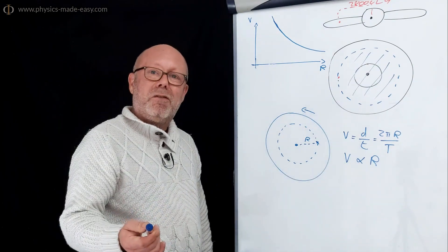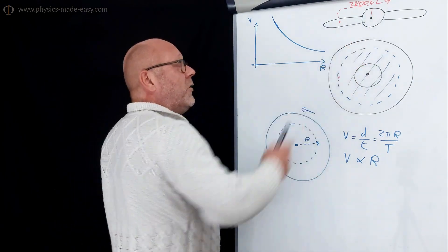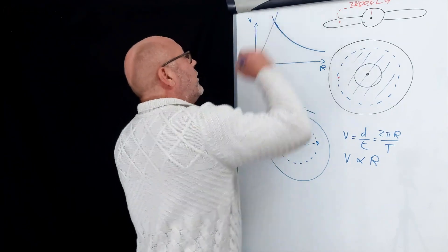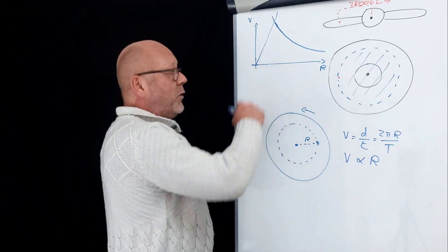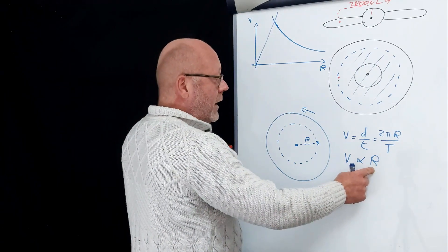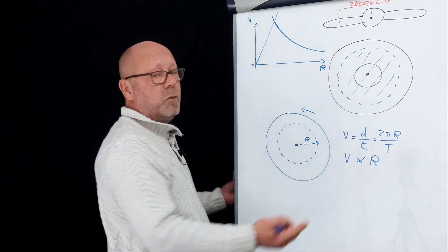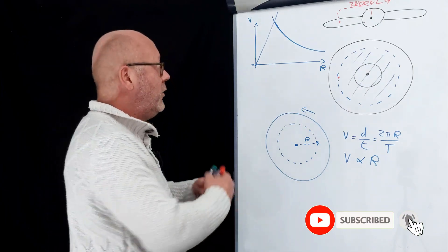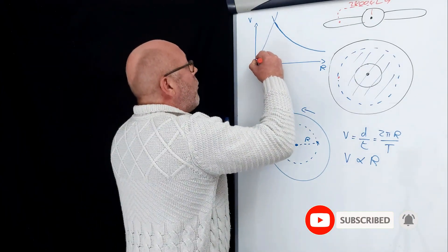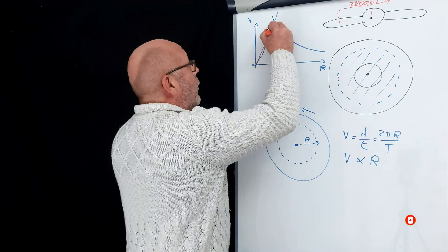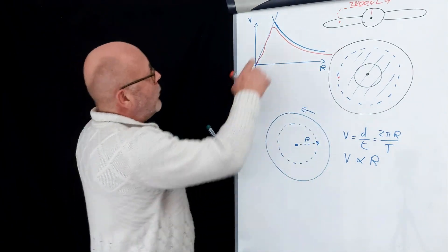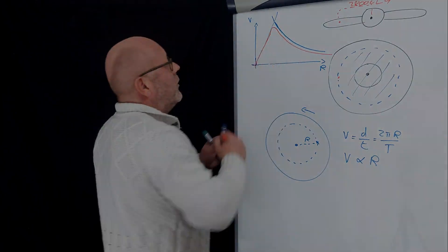That's our velocity curve for stars which are within the core of the galaxy. So we can draw it like this, like a line, passing through the origin, because when the radius is zero, you see the point here has no speed. We're done. We just need to draw here the velocity curve of the stars in the galaxy.